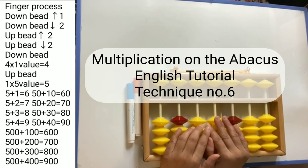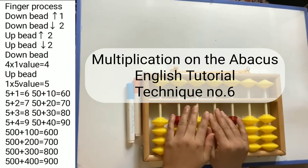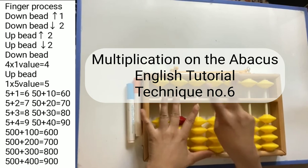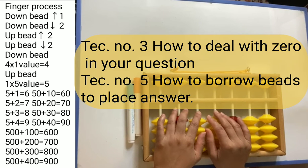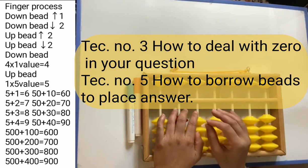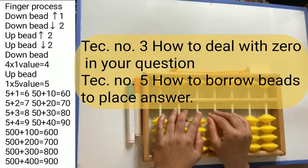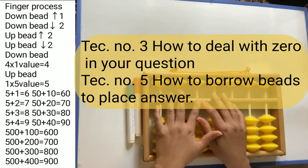Hello, welcome to my Abacus English tutorial. We are doing multiplication on the Abacus. This is technique number 6 and in today's technique I am going to mix up two techniques: technique number 3, how to deal with zero if you have it in your question, and technique number 5, how to borrow bits to place the answer. This is a little bit tricky, so I hope I can explain.